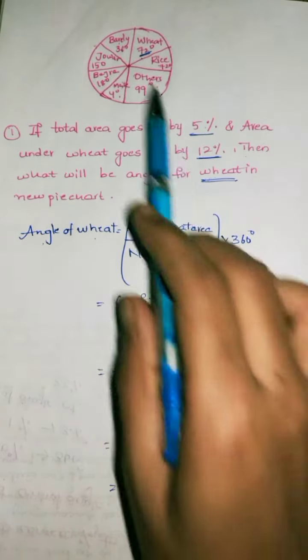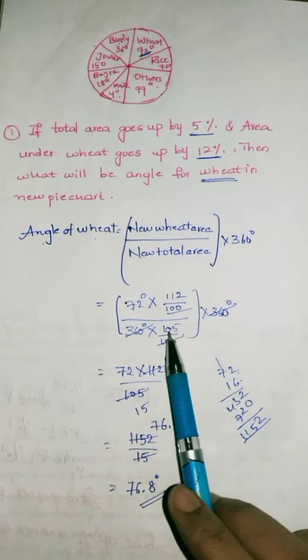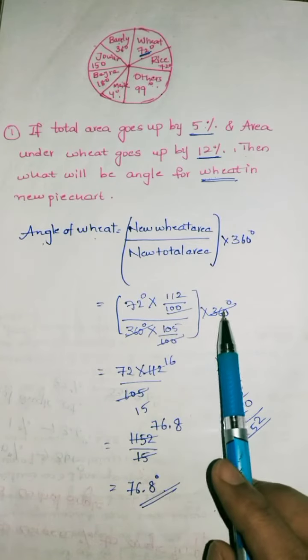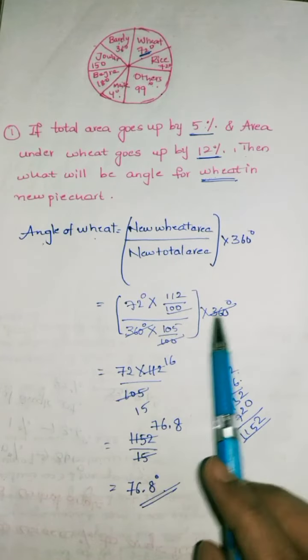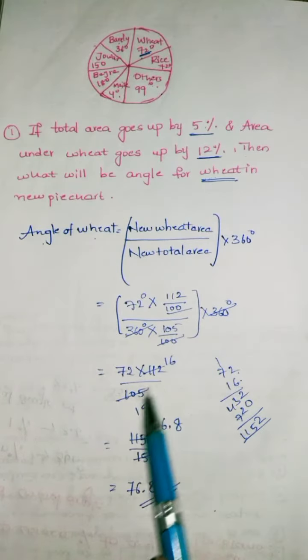New total area: initially the total area is 360 degrees, increased by 5%, so 360 × 105/100. Now we perform the cancellation. 360 cancels with 360, 100 cancels with 100. We get 72 × 112/105.